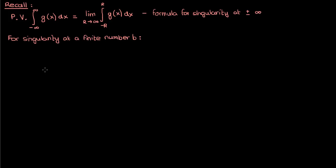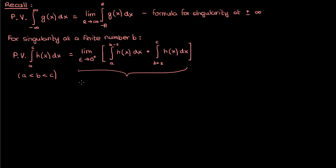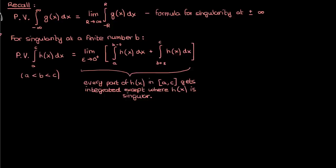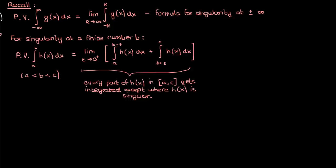We use a different definition of the Cauchy principal value. If we're integrating H(x) from a lower limit A to an upper limit C, and the singularity at B is somewhere in between A and C, then the Cauchy principal value of the integral is found by taking the limit as some small number epsilon approaches 0 from the right, taking the limit of the sum of these two integrals. These two integrals are cleverly designed so that every part of the function H(x) in the interval from A to C gets integrated except the part where H(x) is singular. This is another clever way to assign a number to an integral that would otherwise diverge due to a discontinuity at a finite number. Let's now use these three assumptions to derive the Kramers-Kronig relations.